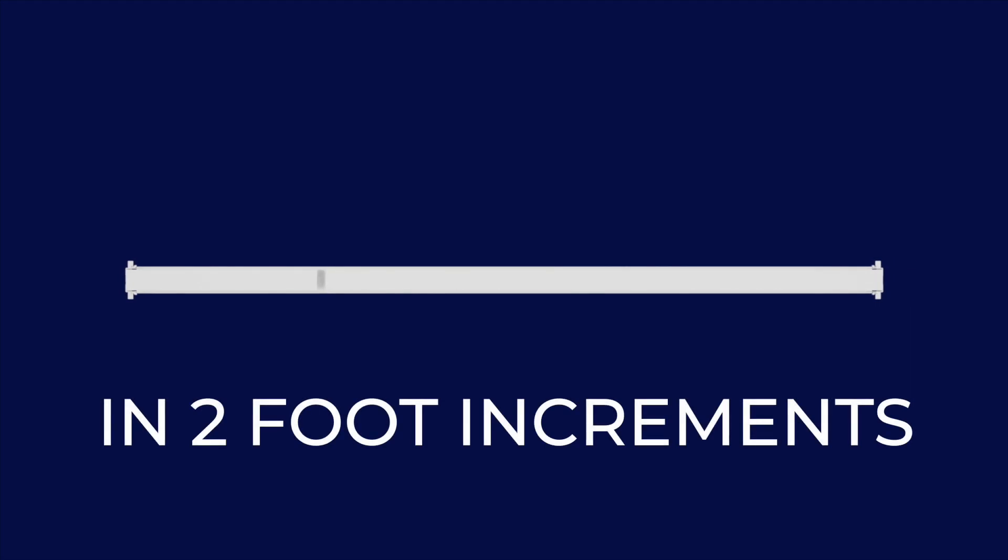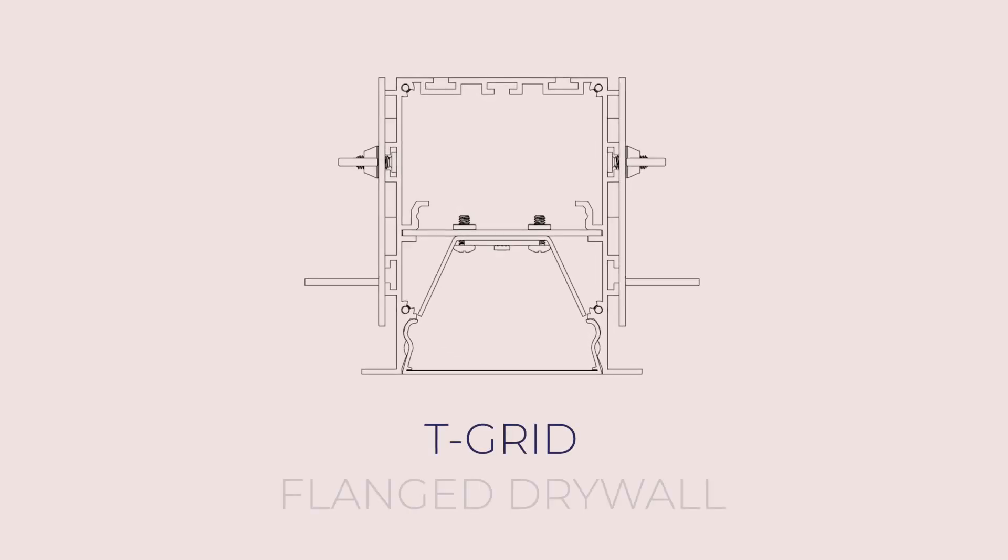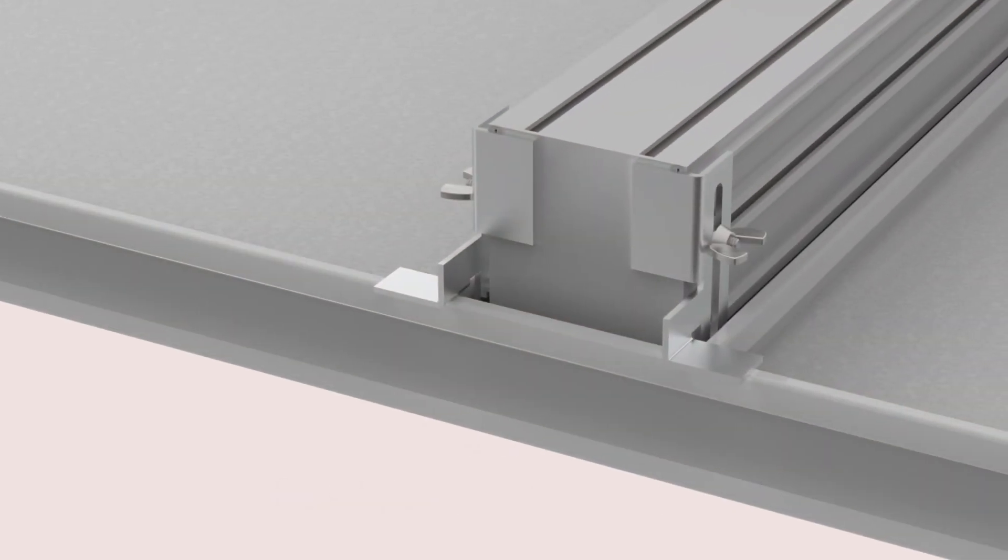This system comes in standard lengths that can also be configured for continuous runs in 2-foot increments. Lensing will match the housing's length. The MRL2 is available with both T-Grid and flanged drywall mounting, with more options to come down the road.